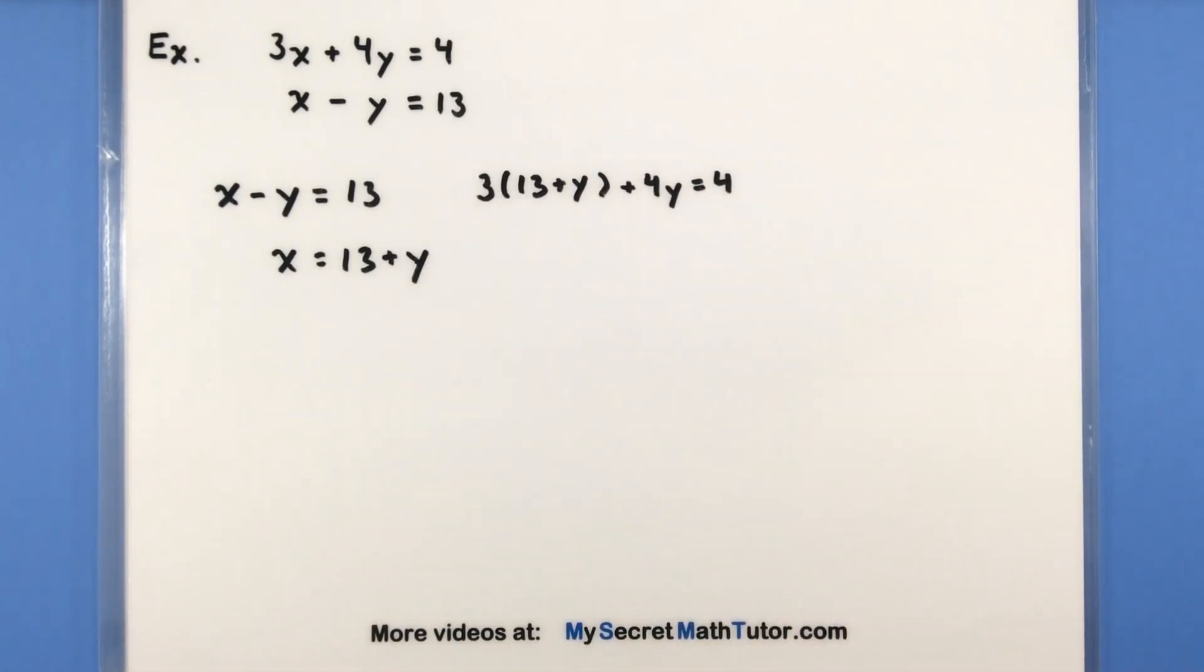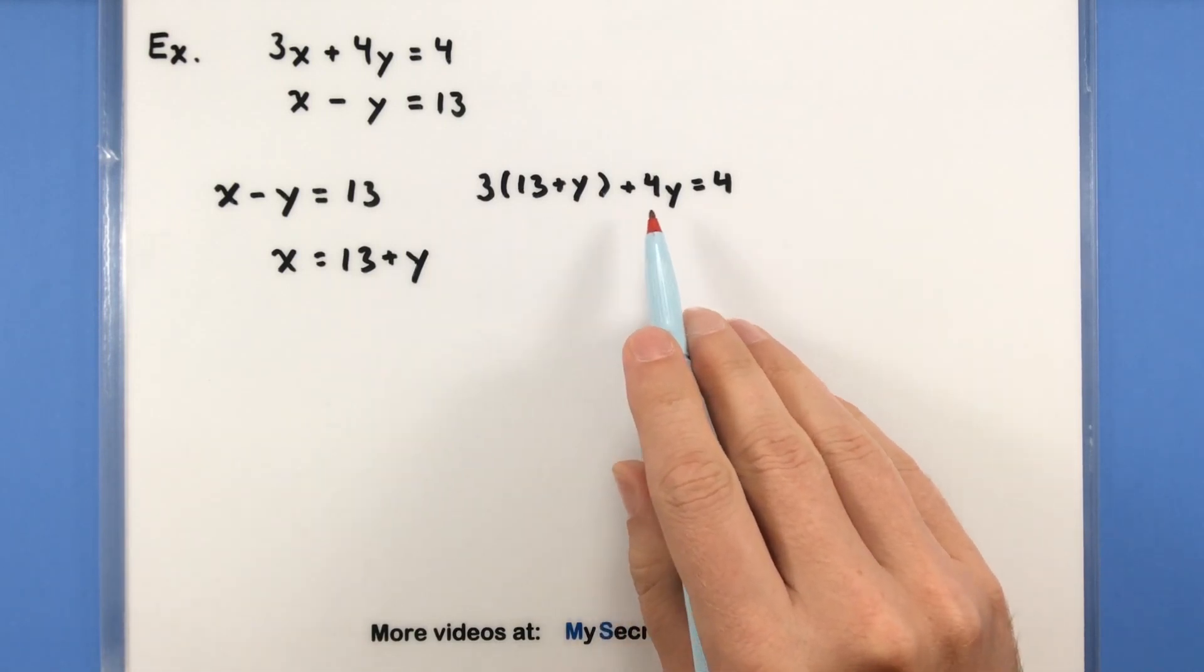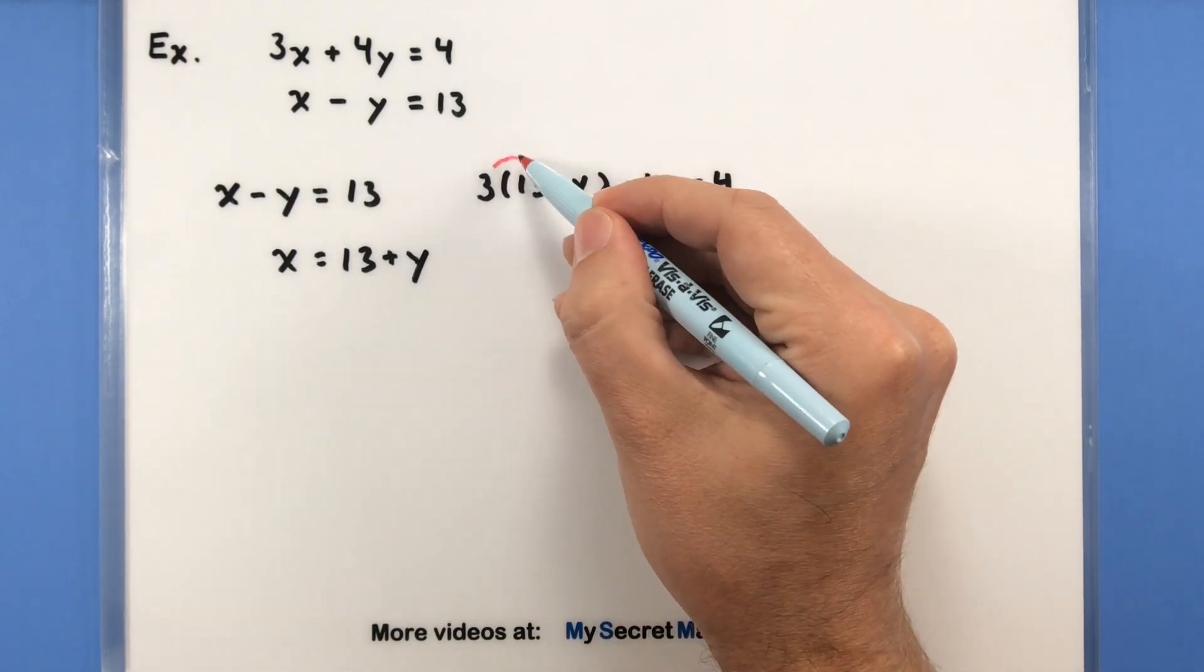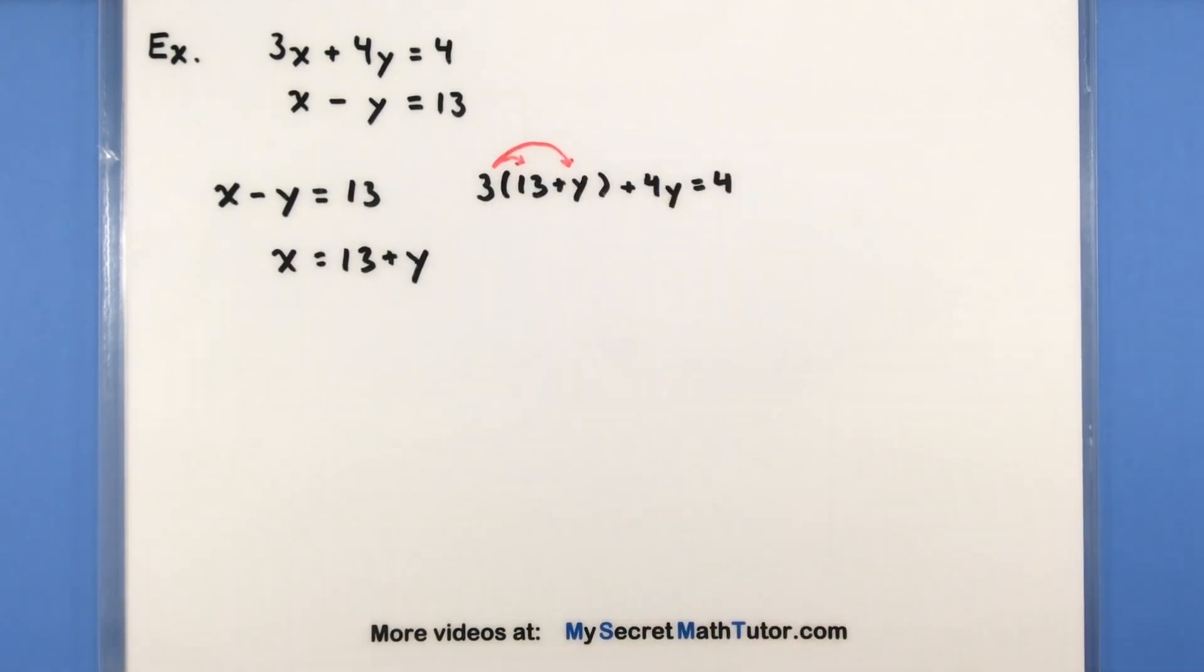Now that we've substituted, we want to solve for the remaining variable, and you can see that we only have y's left. So really now it's a process of solving for what those y's are. We'll start off that process by distributing